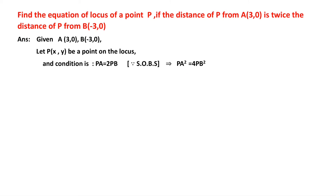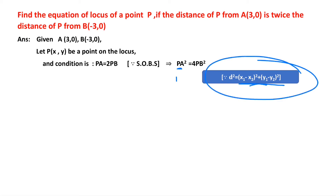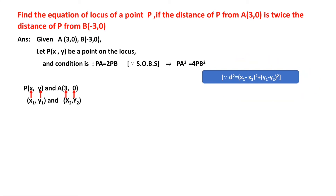To find the distance between P and A, consider P as (x₁, y₁) and A as (x₂, y₂). Using the distance formula squared: (x₂ - x₁)² + (y₁ - y₂)². Since we have PA² here, we remove the root. Substituting P as (x, y) and A as (3, 0), PA² = (x - 3)² + (y - 0)².